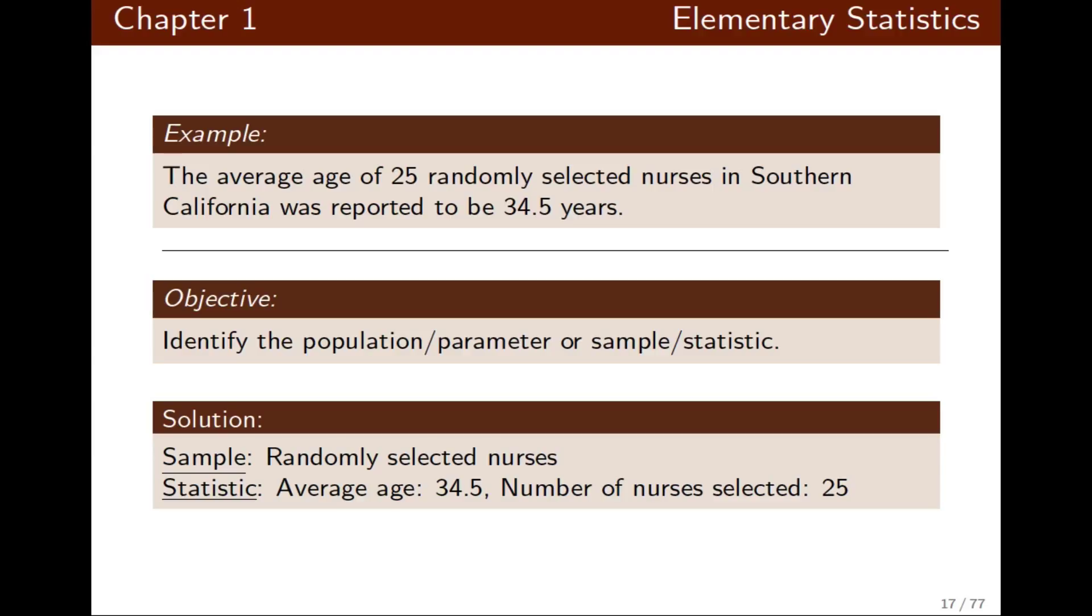The average age of 25 randomly selected nurses in Southern California was reported to be 34.5 years. Again, we want to identify if this is a population parameter or sample statistic.